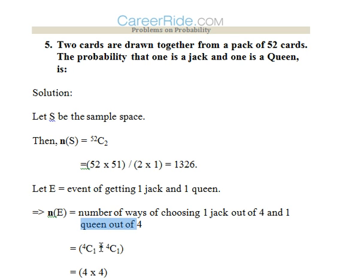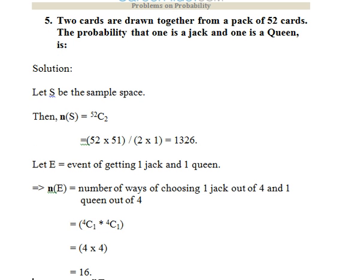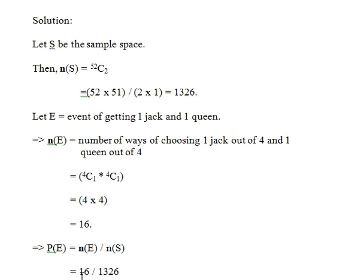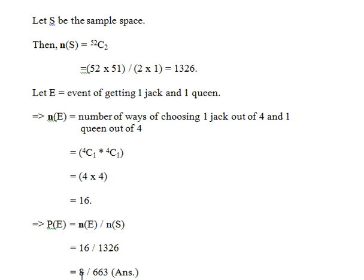And simply we'll go and calculate the probability. That would be 16 upon 1326, that is 8 upon 663. These are the five kinds of problems which you can see from the chapter probability. I hope this video would prove useful to you.